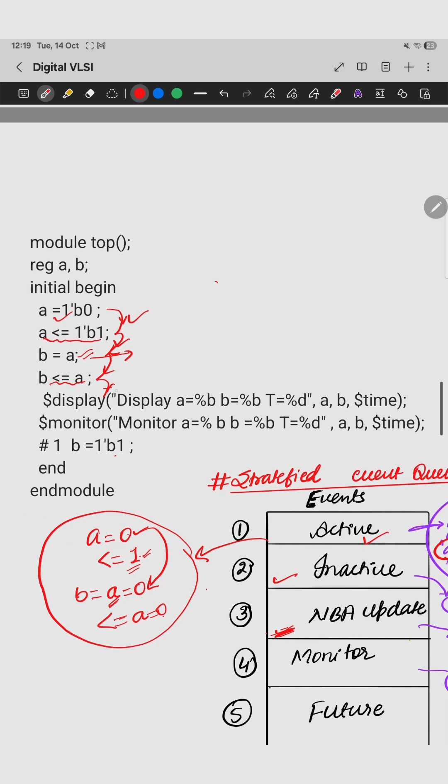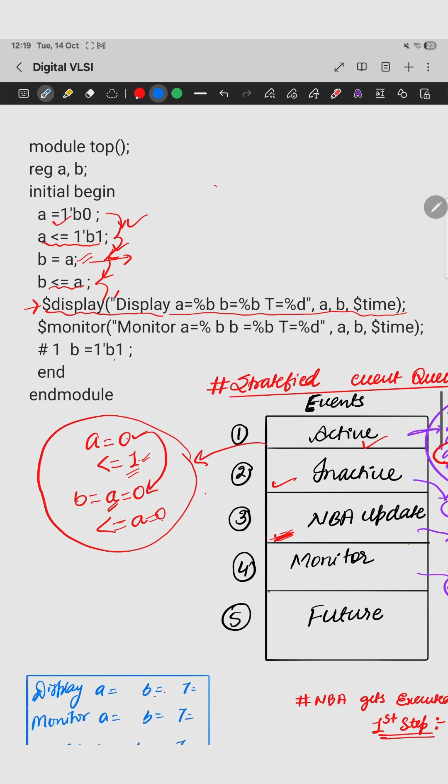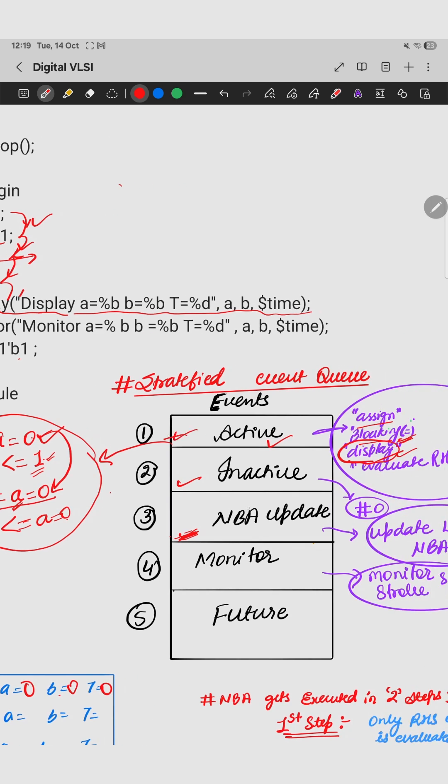But before going further there is a display also. Coming to the next step, we will be executing this display. When you put this statement for analysis, you will find that the display will print outputs like this: A is equal to 0, B value is 0, and this all is happening at T equal to 0.